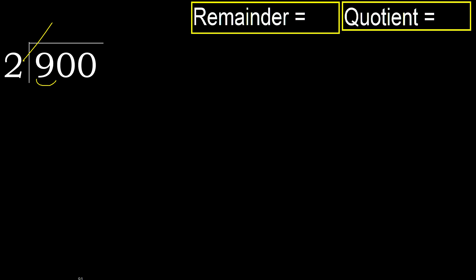2 multiplied by 5 is 10 — 10 is greater. Multiply by 4 is 8; 8 is not greater. 9 minus 8 is 1.